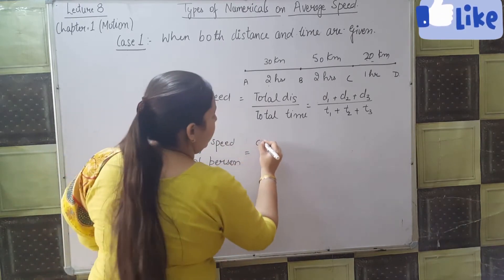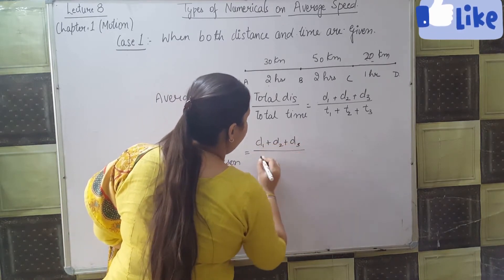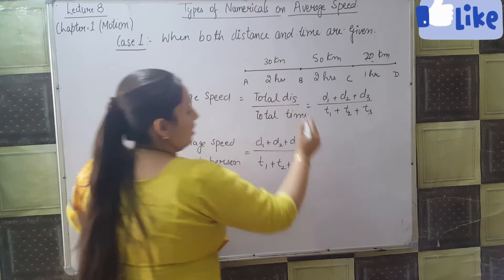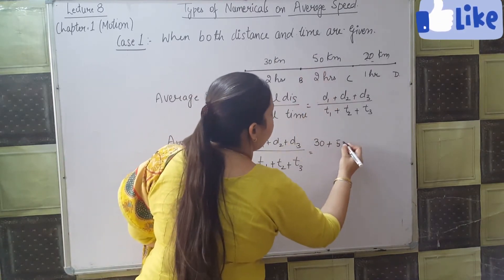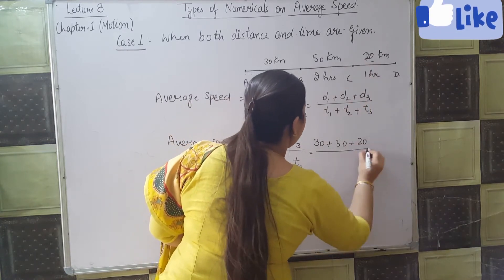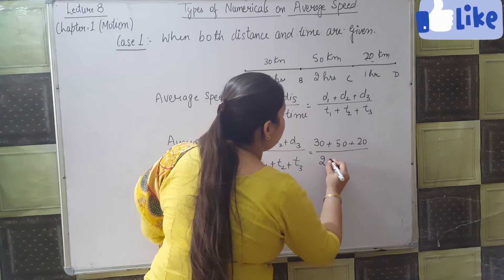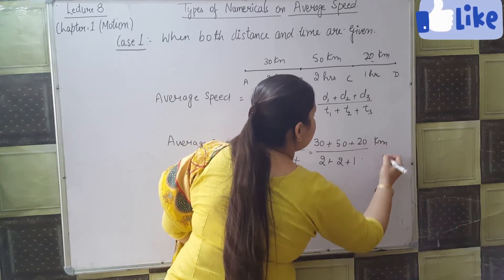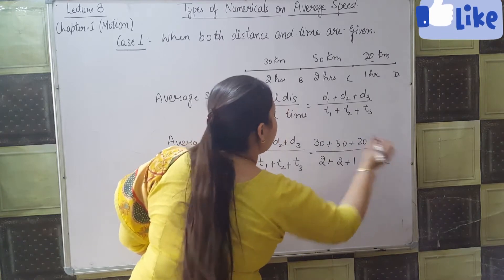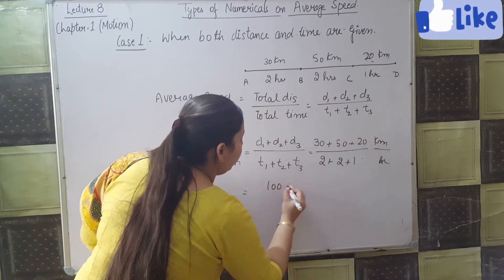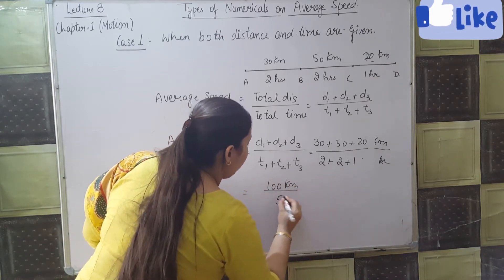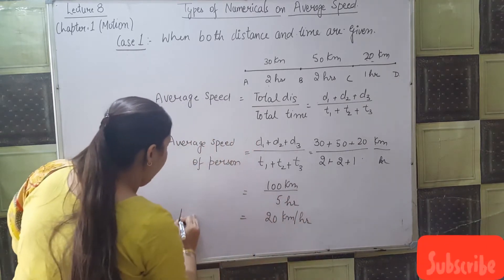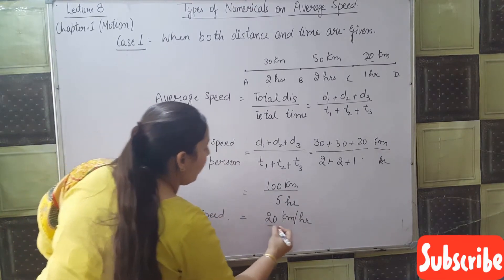Average speed equals total distance d1 plus d2 plus d3 divided by t1 plus t2 plus t3. Here d1 is 30, d2 is 50, d3 is 20, t1 is 2 hours, t2 is 2 hours, and t3 is 1 hour. That gives us 100 kilometers divided by 5 hours, which equals 20 kilometers per hour. So the average speed is 20 kilometers per hour.